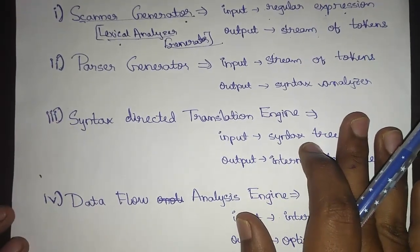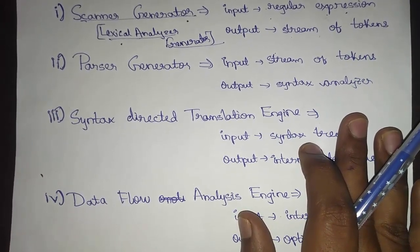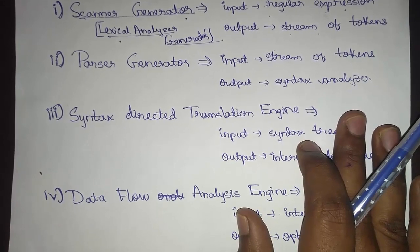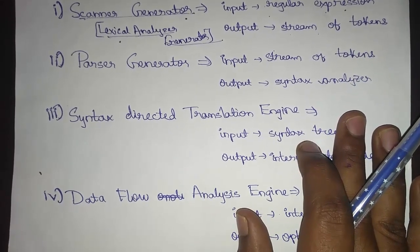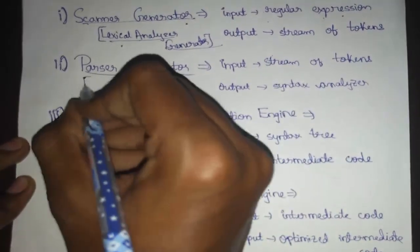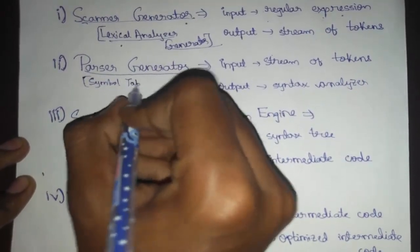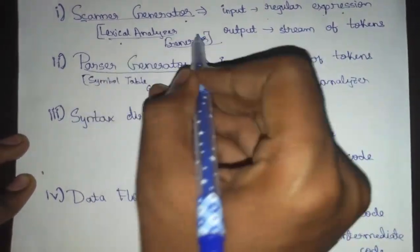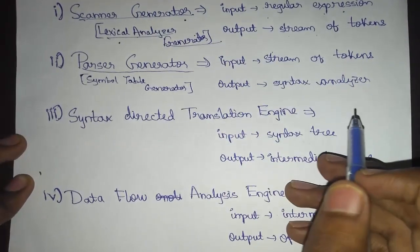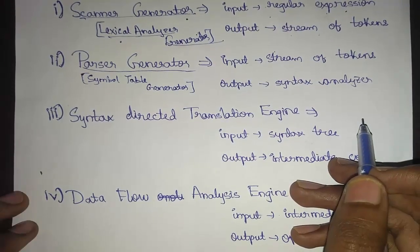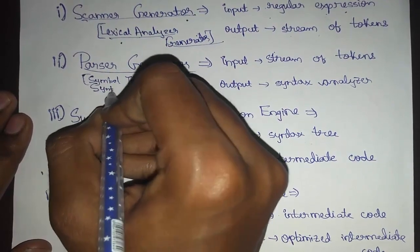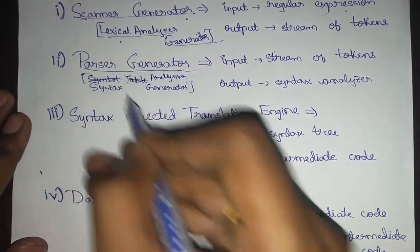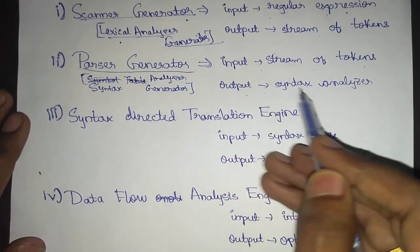A parser is nothing but the syntax analyzer. The parser is also known as the syntax analyzer, while the scanner is the lexical analyzer. The parser generator is a syntax analyzer generator. Its input is the stream of tokens, and the output is a syntax analyzer or a syntax tree.